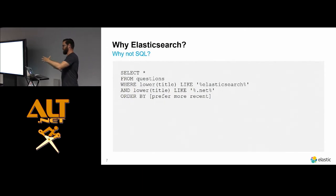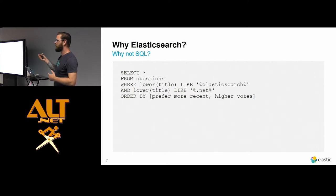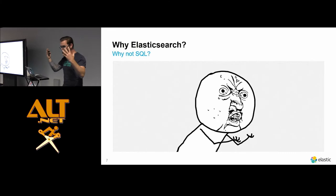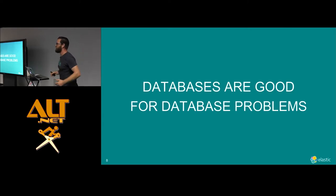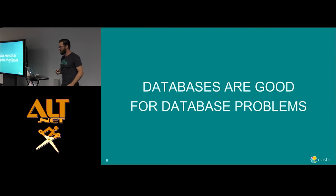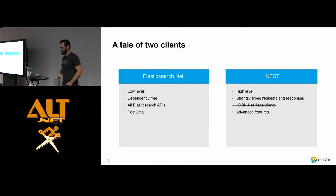Then your boss comes back and says - can we also favor questions with a slightly higher vote? Can you incorporate that into your user-defined function? At which point you just look at your boss and say no. And you realize that databases are good for database problems - good for relational data, good for transactions. I'm not going to suggest you use Elasticsearch for your OLTP database - that would be crazy. Databases are good for database problems; Elasticsearch is good for search and analytics problems.